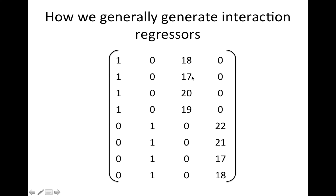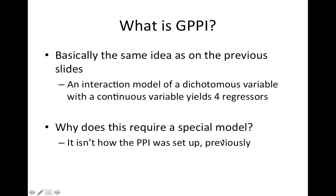The hypothesis of interest would be a contrast comparing the parameters for the two slope regressors to each other. I like this setup because it's intuitive — it allows you to have an intercept for each group and a slope for each group. Of course, PPI is dealing with time series, and as we saw in the last video there is a deconvolution step we use to get at the neuronal signal estimate. Then we create the interaction in the neuronal time domain and reconvolve it to create the regressors.